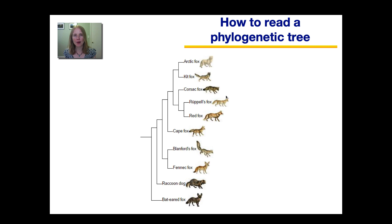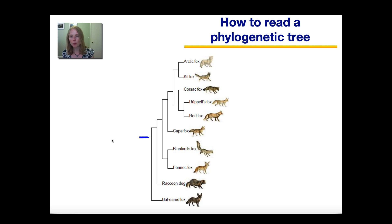Now we will talk about how to interpret a phylogenetic tree. In a tree, the different branch points — the ends — represent particular groupings of organisms. That grouping could be an individual species or sometimes the grouping is at a bigger level of classification. This tree shows how different species of foxes came from a common ancestor. This branch that I'm highlighting represents the ancestor of all of these species shown here. At some point in time there was one ancestral fox species. Here where you see the line branch represents the point in time when this ancestral fox diverged or split into two different species of foxes.